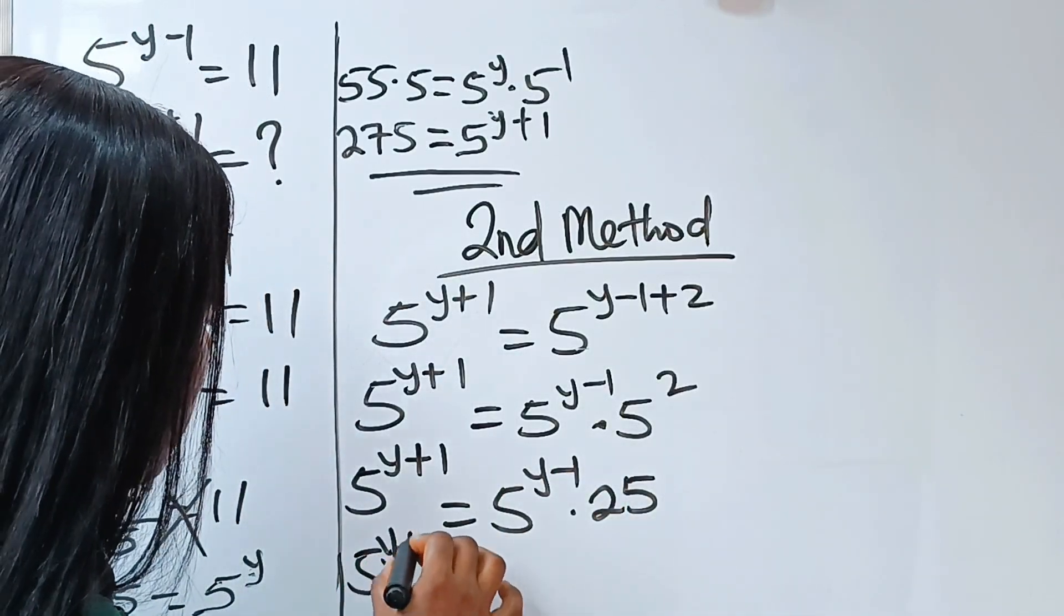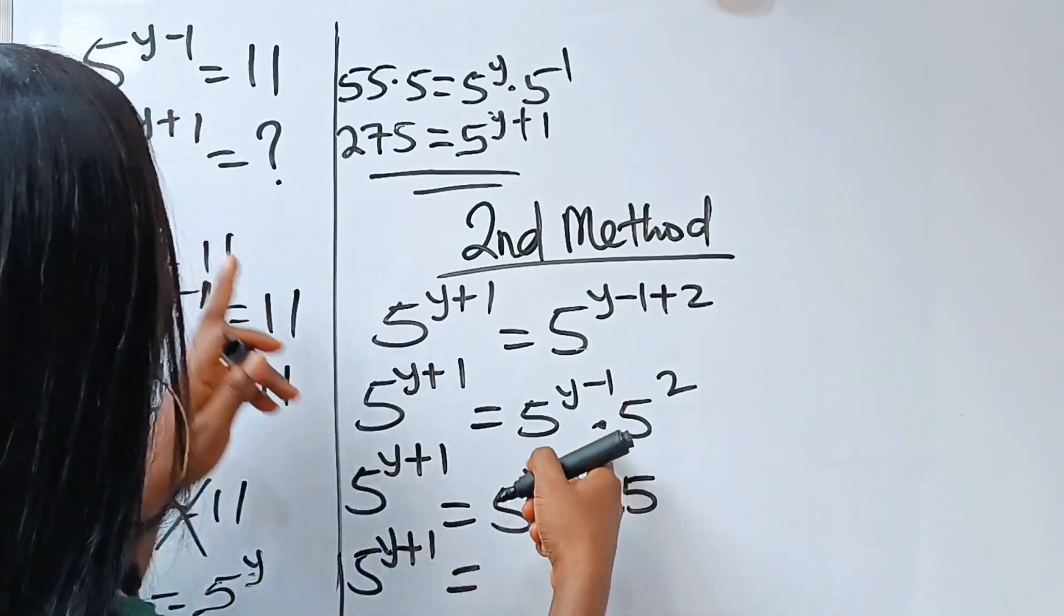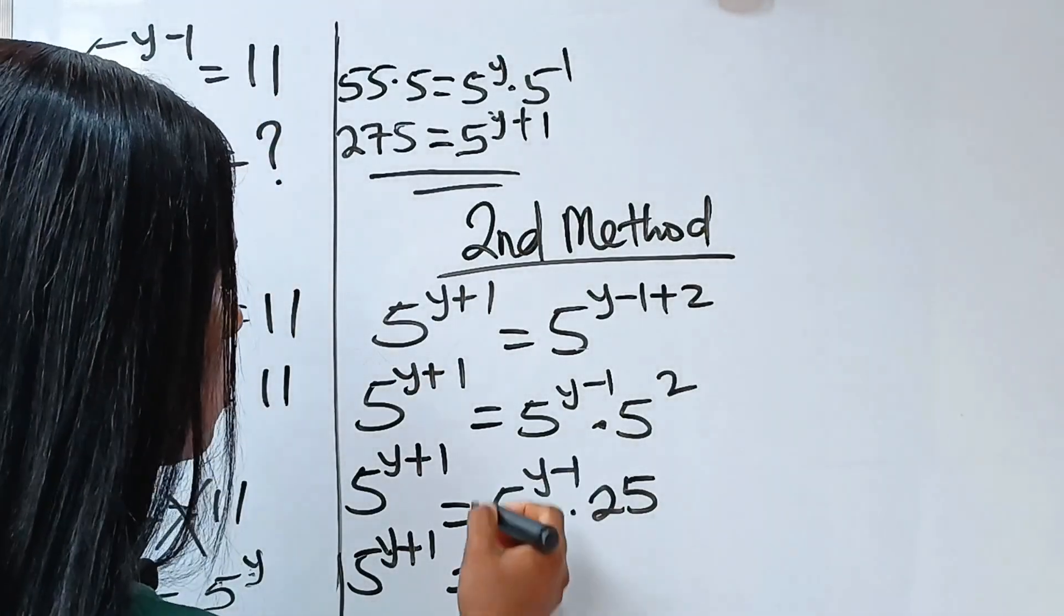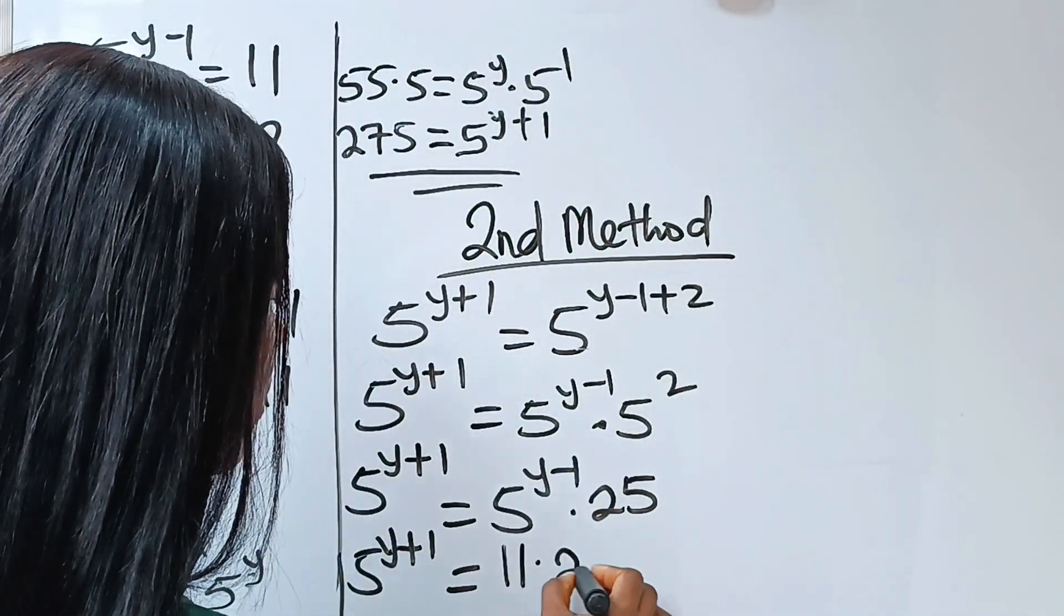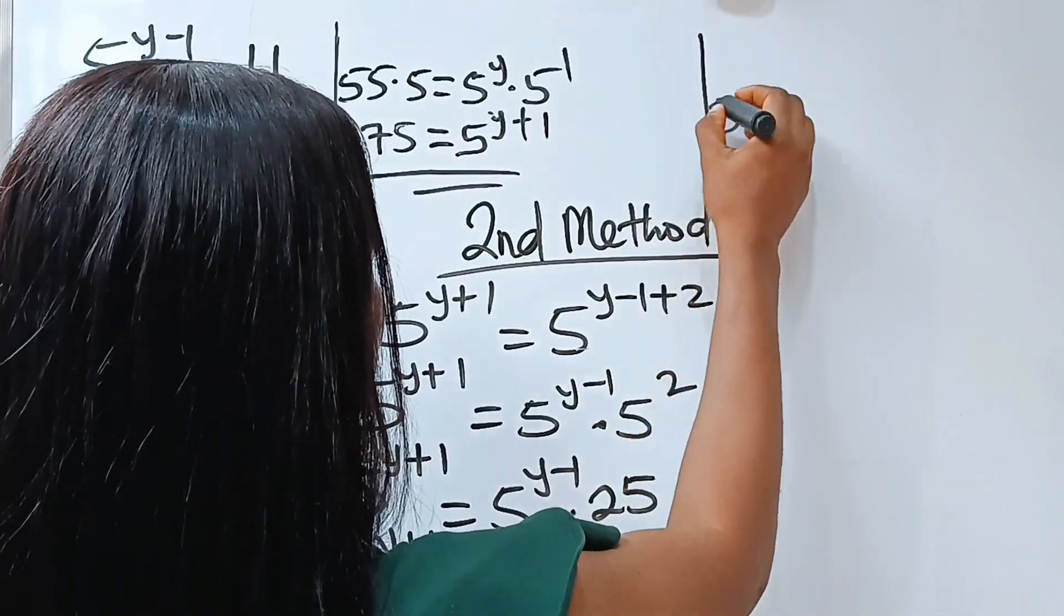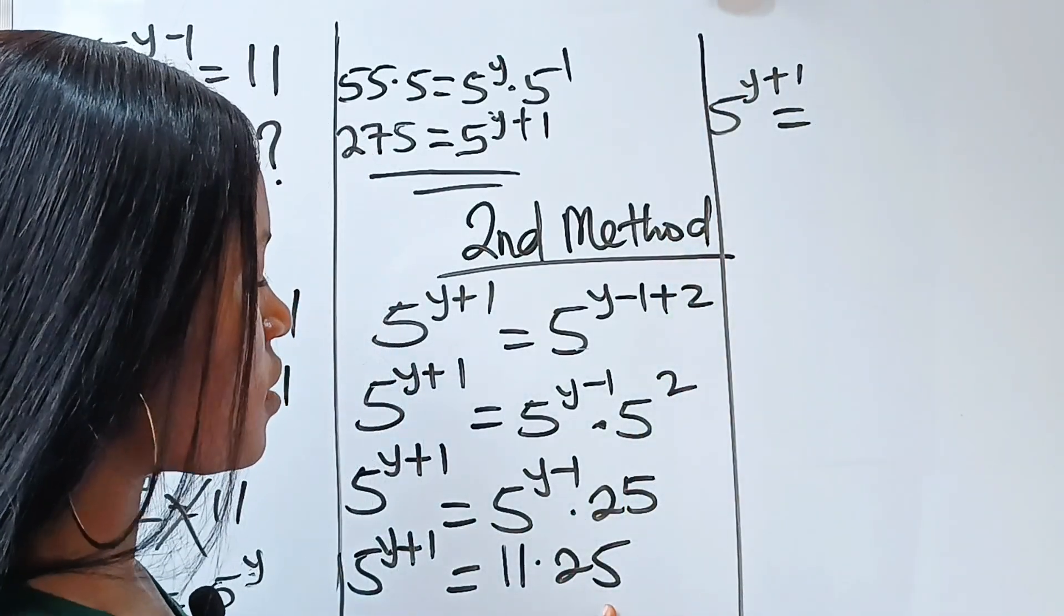We have that 5 to the power of y plus 1 is equal to... 5 to the power of y minus 1 is 11. So that means the whole of this is 11 multiplied by 25. So when we solve that, we have 5 to the power of y plus 1 is equal to 11 times 25.